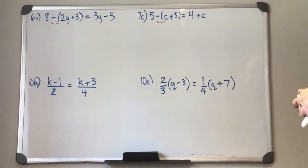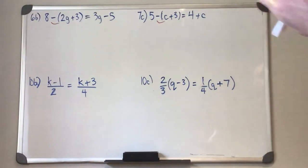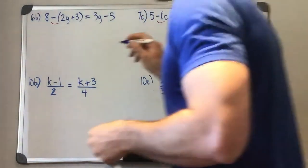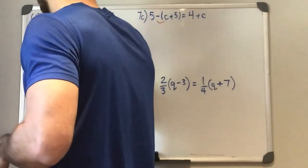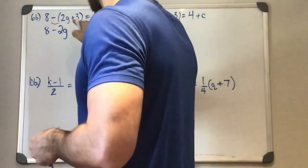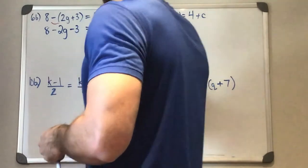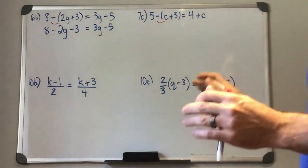So in our first one, the way we did this prior to March break, I know that's a long time ago, but we would take that negative from the outside and what it would do is it would change the sign of everything inside the brackets. So we'll have a positive 2G change to a minus 2G, a positive 3 change to a minus 3, and our right side would stay the same.